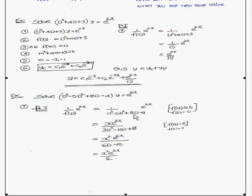Since f(2) = 0, we multiply the numerator by x, giving x·e^(2x), and differentiate the denominator: d/dD(D³ - 5D² + 8D - 4) = 3D² - 10D + 8. Substituting a = 2 again into 3D² - 10D + 8 still gives 0, so we must repeat the process.